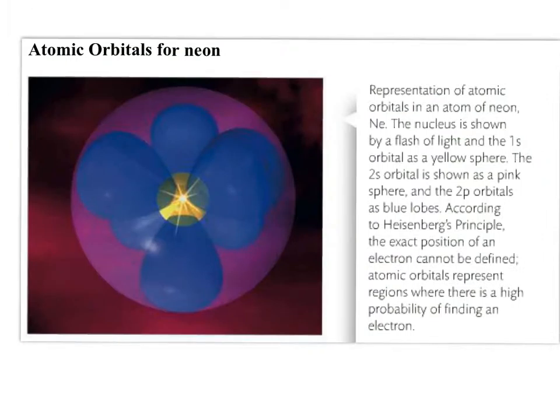This picture here represents neon, and the flash of light in the center is the nucleus, whereas the yellow place is representing the 1s orbital, and you see it's surrounded by the bigger pink 2s orbital. And then bigger than the 1s orbital, but confined within that pink 2s orbital, are the 3p orbitals, which are blue lobes, and there's six of them because each one is kind of this peanut shape. So as Heisenberg said, we can't know exactly where any of the electrons are for neon, but this picture gives us an idea where we're likely to find the 10 different electrons.